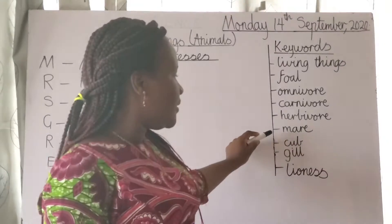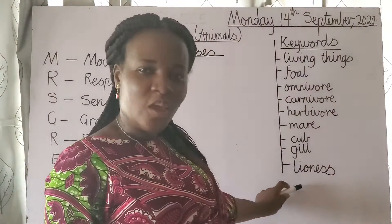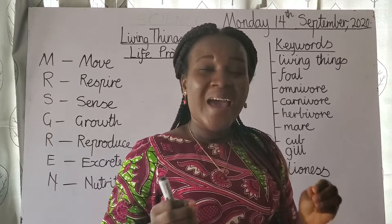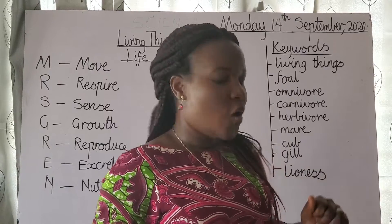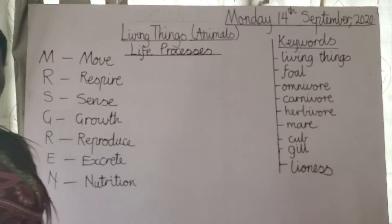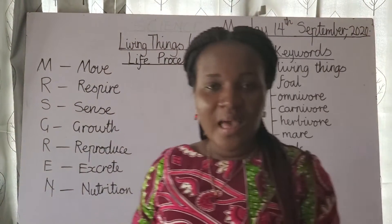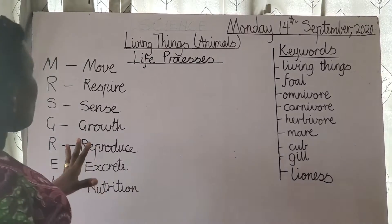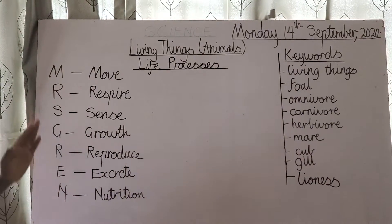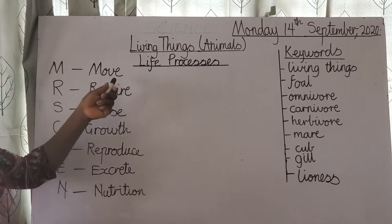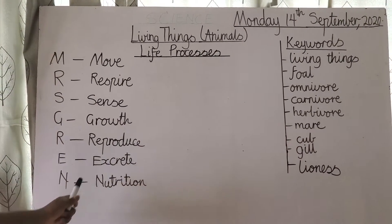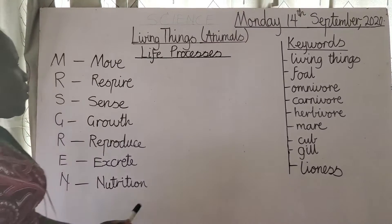When we are done with this lesson, you should be able to tell me why animals are living things. We are going to look at the life processes of living things, or animals. Last week I showed you something called MRSGREN — the short form of the initial letters of the seven life processes: M stands for move, R for respire, S for sense, G for growth, R for reproduce, E for excrete, N for nutrition.